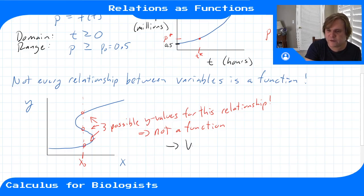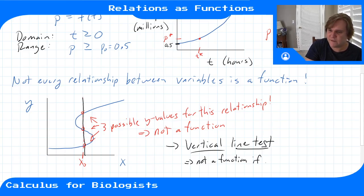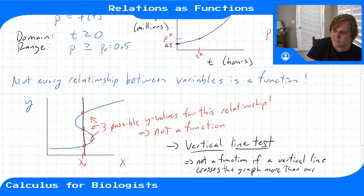And so this is what's called the vertical line test where you take your graph, you draw a vertical line through it, and if your vertical line crosses your graph more than once, then that means you have this situation. It means that you have more than one possible output for a given input, which means it's not a function. So not a function if a vertical line crosses the graph more than once.